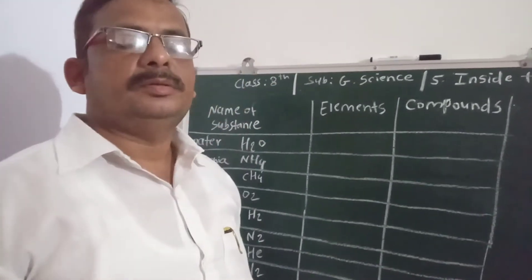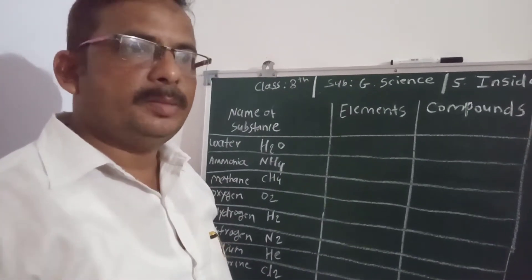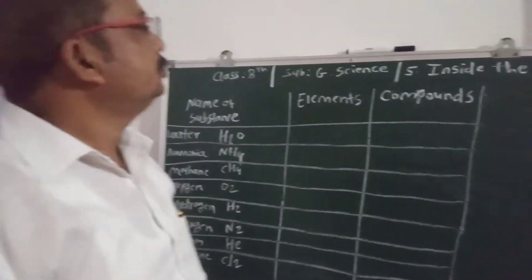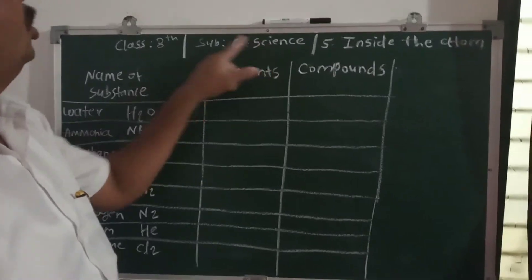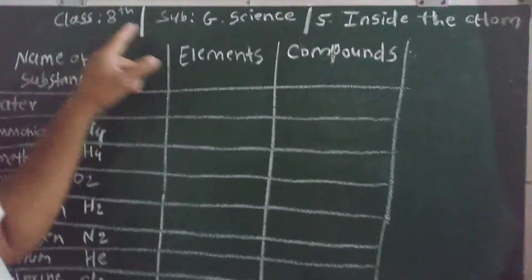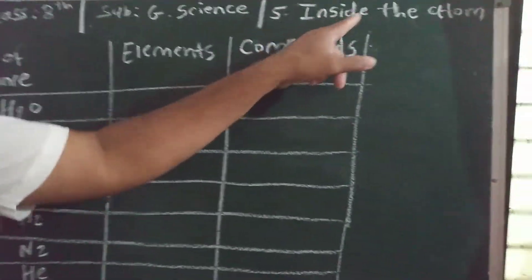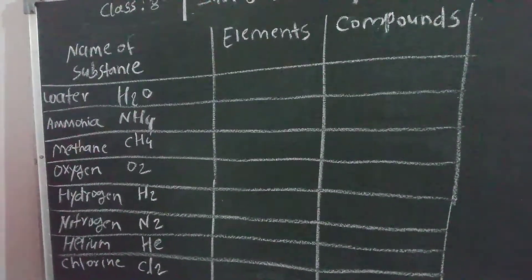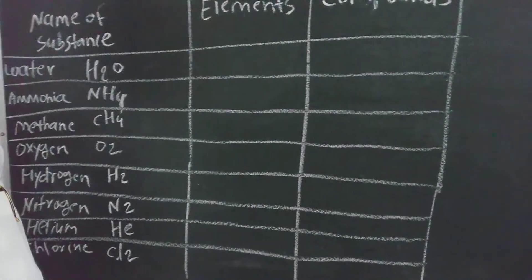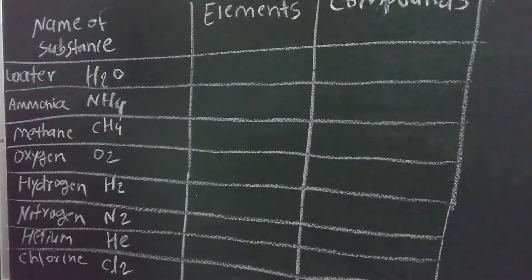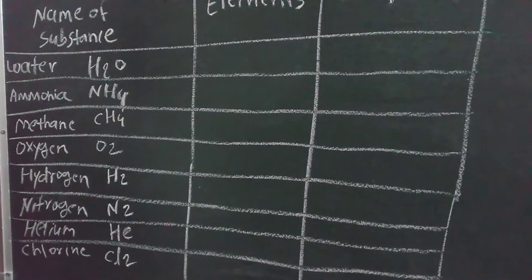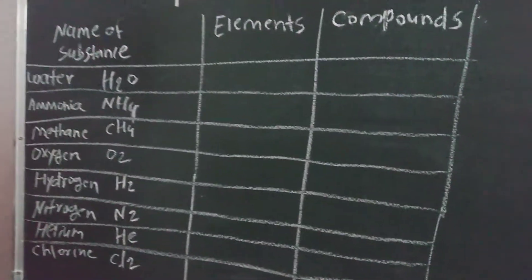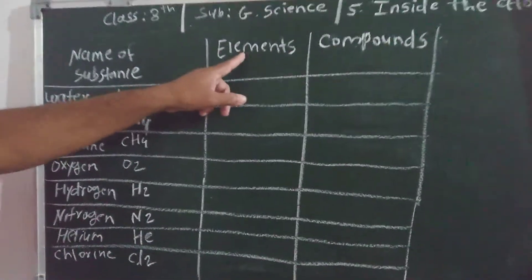Good morning students. I am Dhandi sir from Adarshi Dhali Patafangi. Today we will learn about General Science for 8th class, chapter number 5: Inside the Atom. In the previous class, we have already studied about matter — what is matter, how matter is formed, atoms and molecules. So today we will study about elements and compounds.